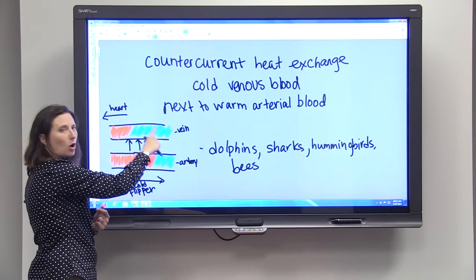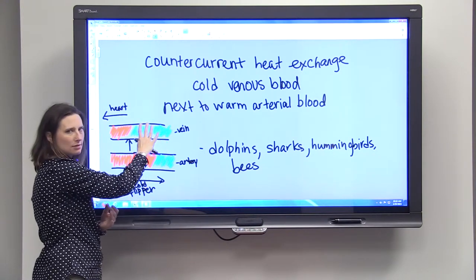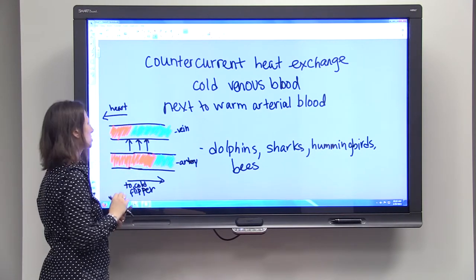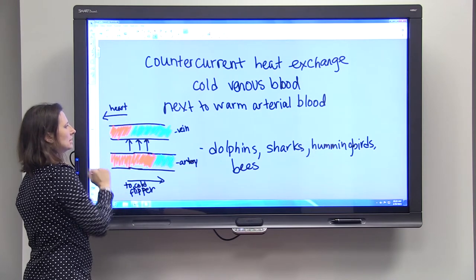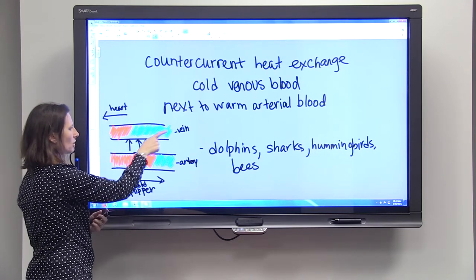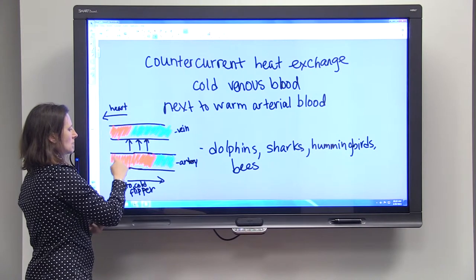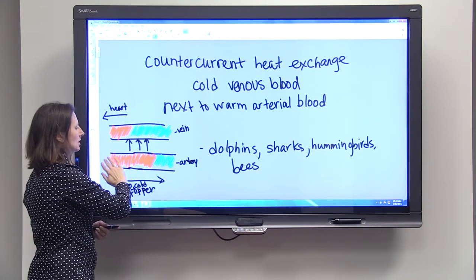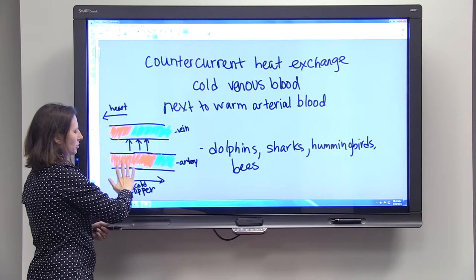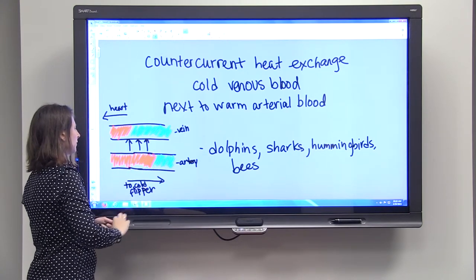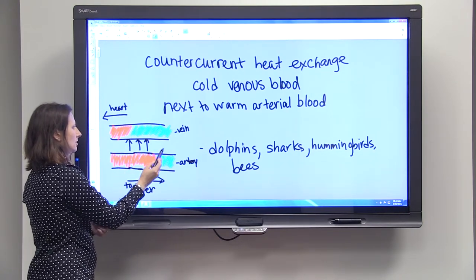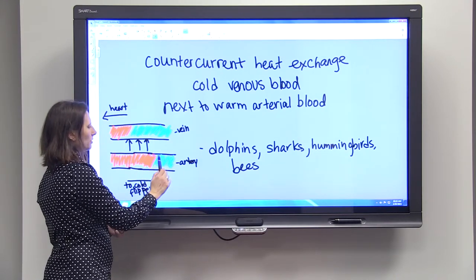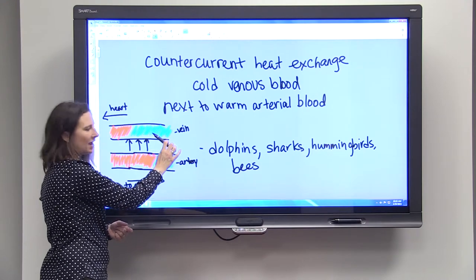So this cold, this blue is used here to represent cold and not to represent deoxygenated blood. All of this blood is deoxygenated as it's going from the body to the heart and all of this arterial blood is oxygenated, but we're using this to represent heat, this red and blue. So as the artery runs out to the cold flipper, that blood becomes colder because it's giving its heat to the vein.